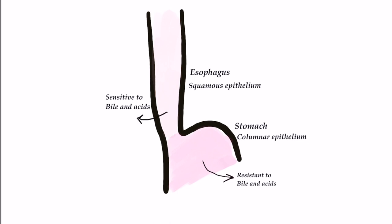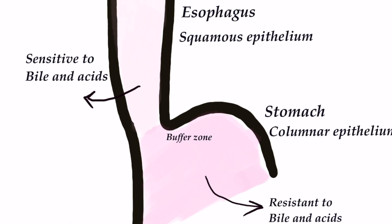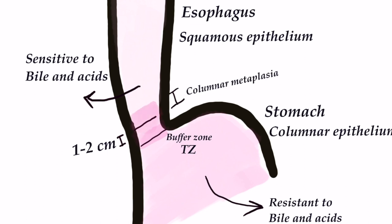Switching from squamous to columnar epithelium is not exactly a line. Columnar epithelium of the stomach is resistant to acid and bile, while squamous epithelium of the esophagus is sensitive to it. So there is a buffer zone — a transitional zone — in between the two mucosae. This transitional zone extends one to two centimeters proximal to the squamo-columnar junction in the esophagus, so the distal one to two centimeters of the esophagus can be lined by columnar epithelium normally.